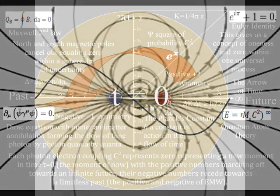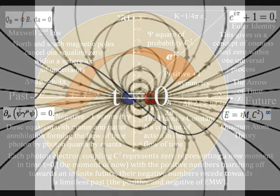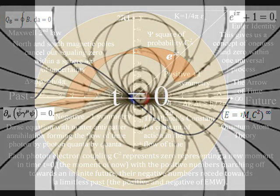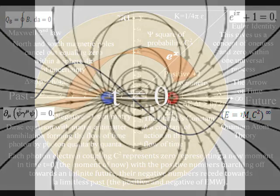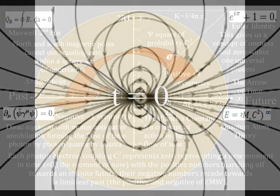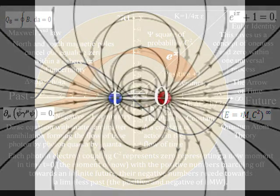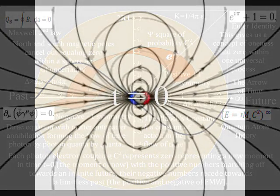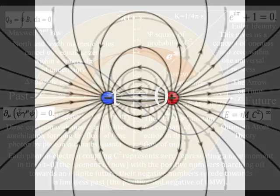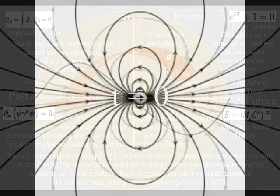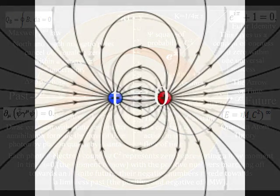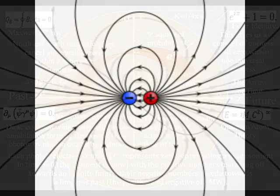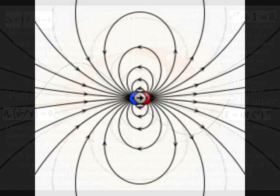As can be seen on the diagram, we already have zero, representing the moment of now, time equals zero, with positive one and minus one representing the positive and negative of electromagnetic waves.